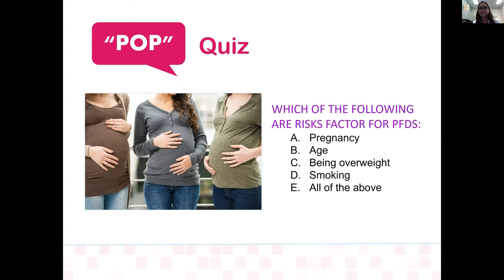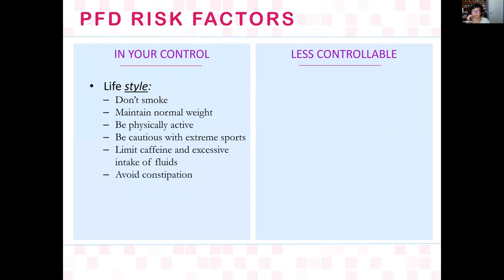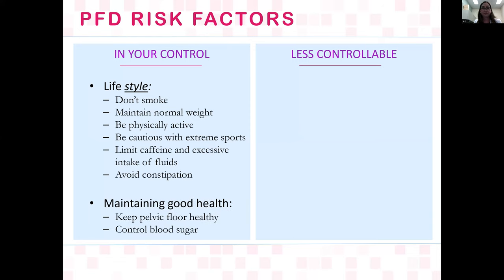Which of the following are risk factors for pelvic floor disorders: pregnancy, aging, overweight, or smoking? The answer is all of the above. Some things we can control include lifestyle modifications such as not smoking, maintaining normal body weight, being physically active, avoiding extreme sports or extreme heavy weight lifting, limiting caffeine or excessive fluid intake, avoiding constipation, and keeping pelvic floor healthy by controlling blood sugar.